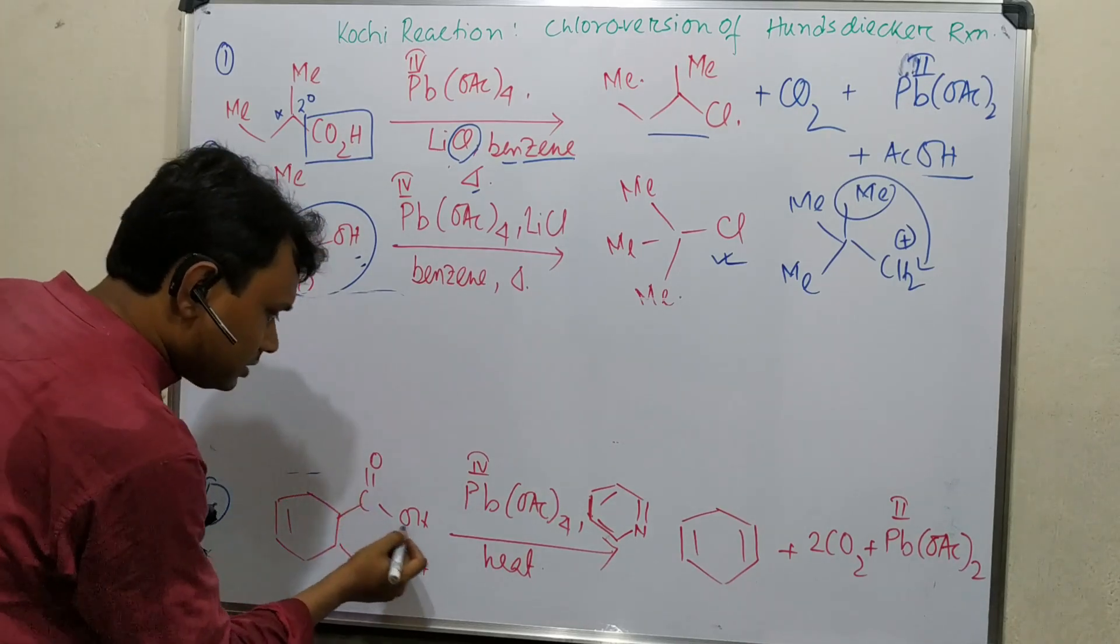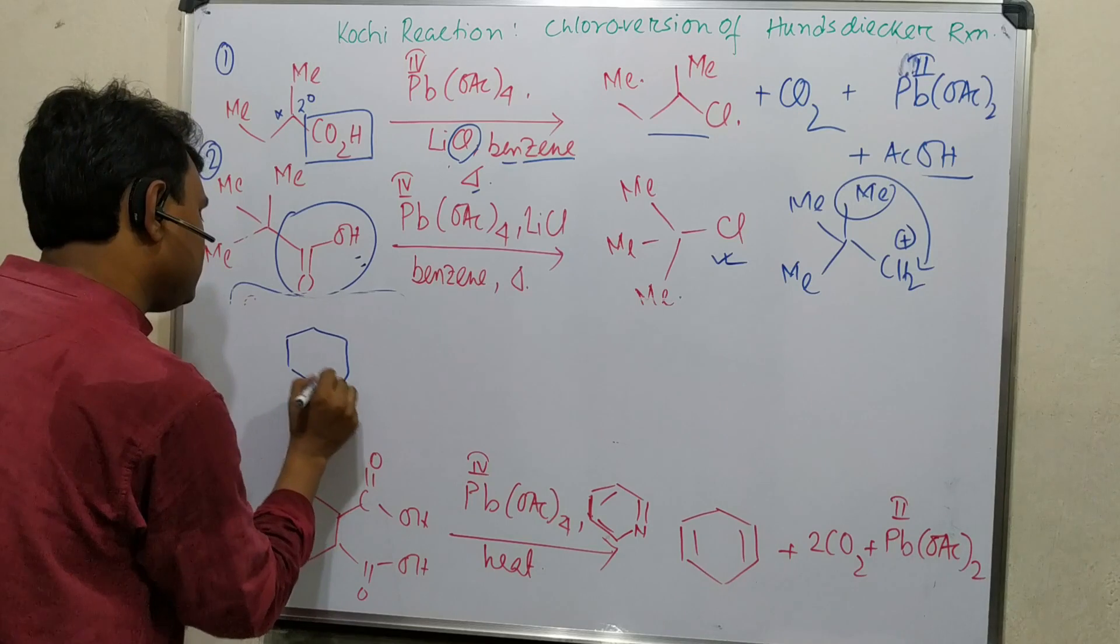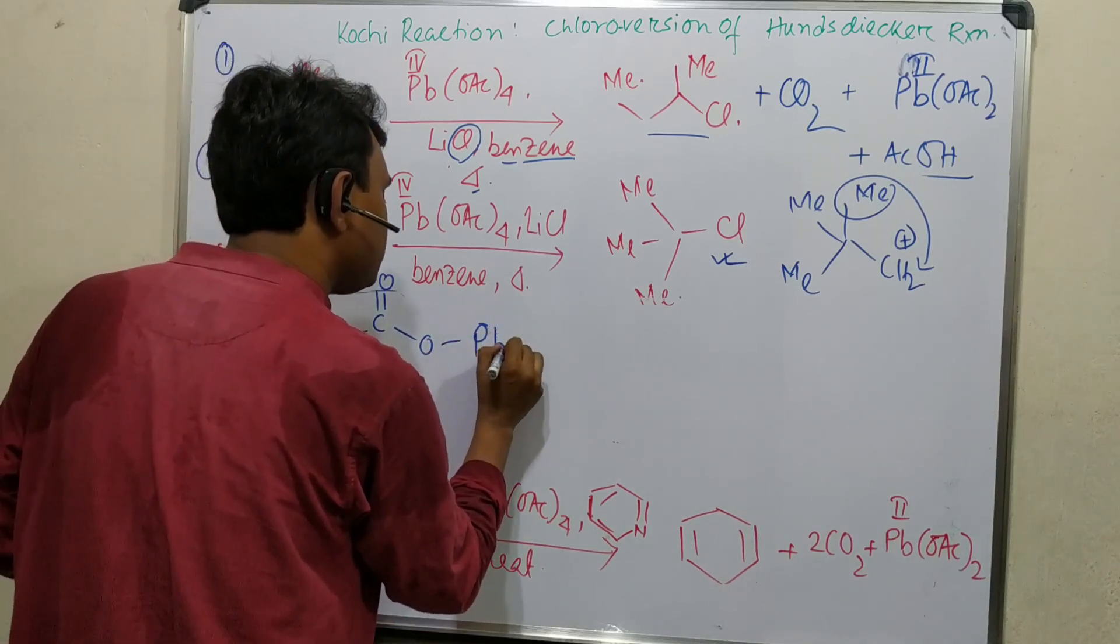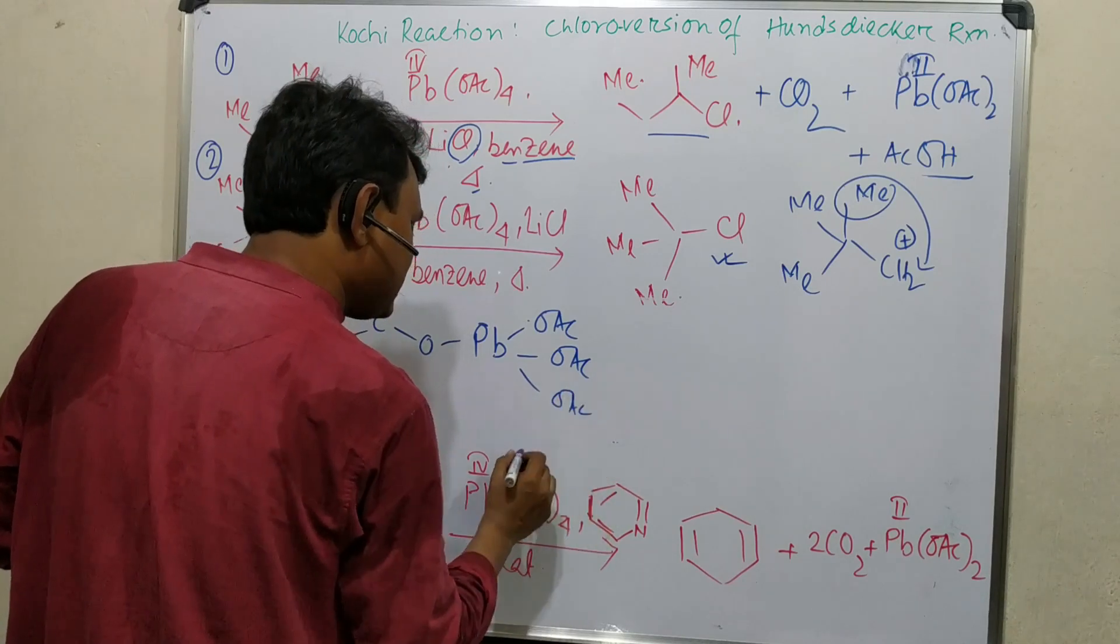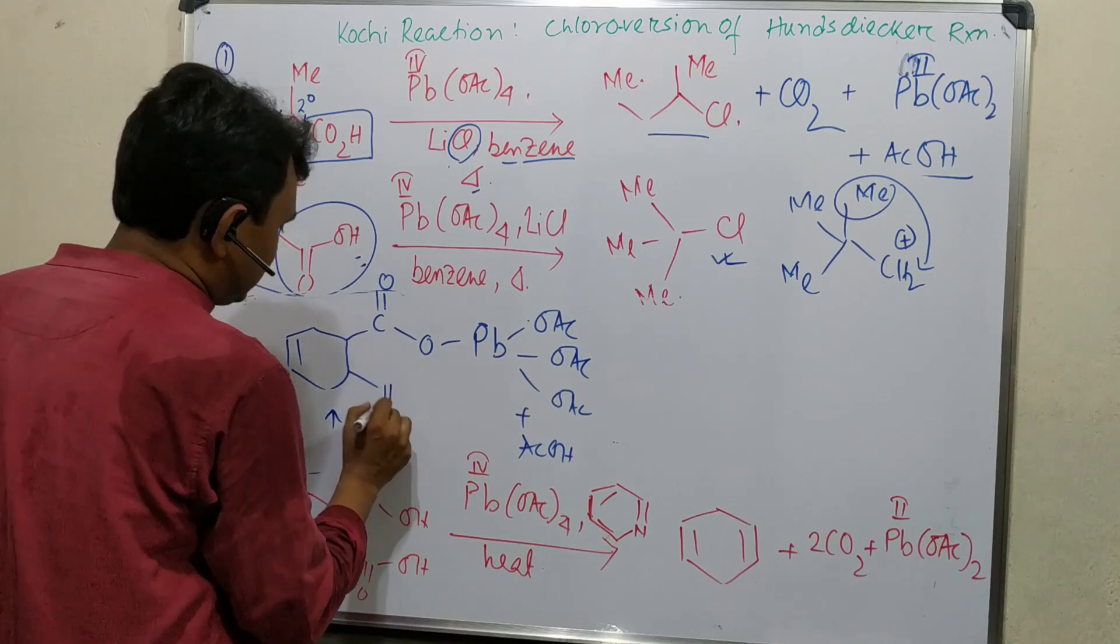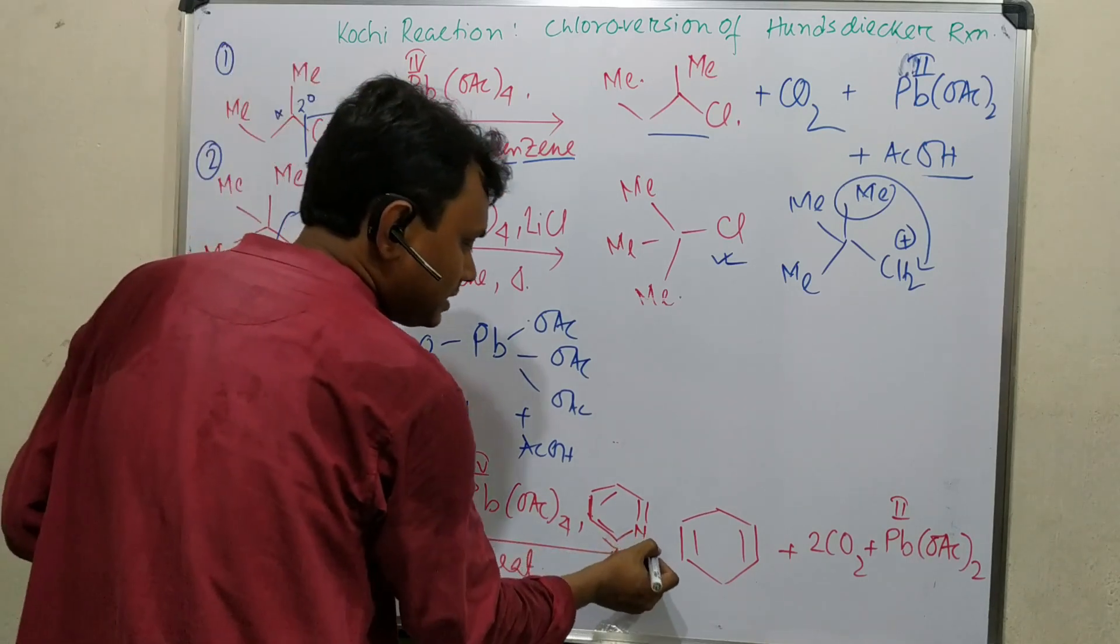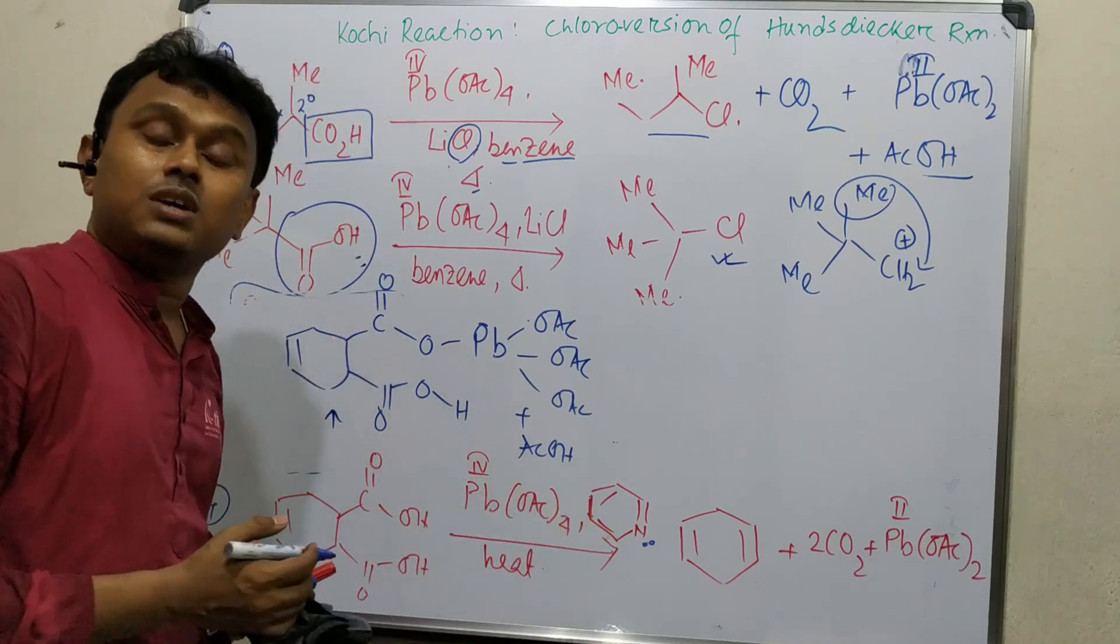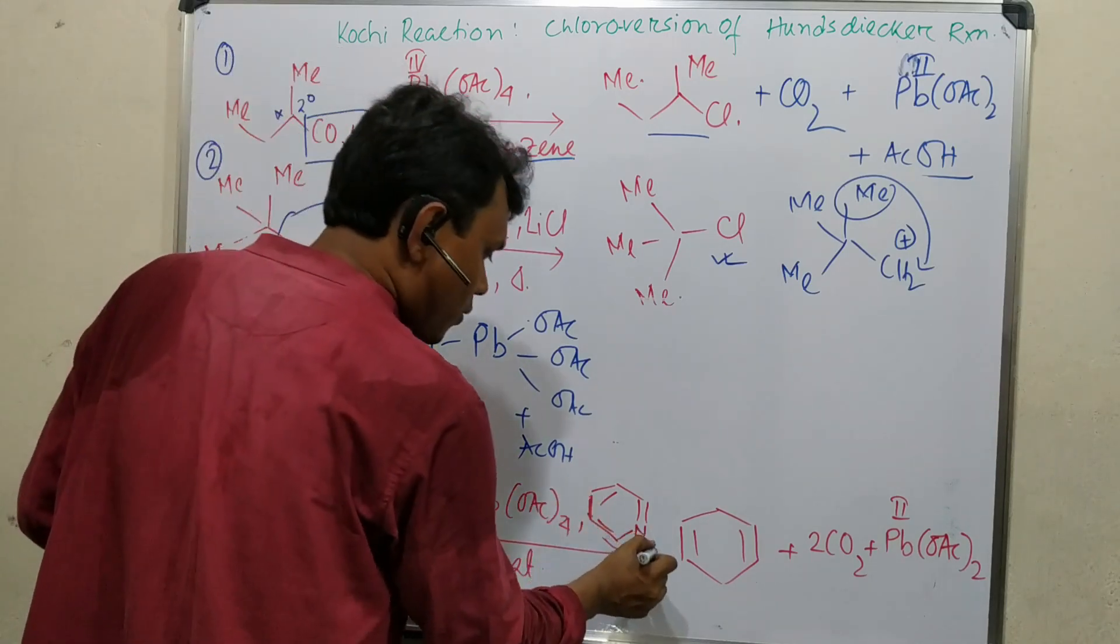Now let's discuss the fourth example which is a little tricky. This first attaches to lead tetraacetate. One acetate will be eliminated as acetic acid. Along with acetate there is heat and pyridine. As we know, there is no lithium salt here, so it's not directly the same mechanism but resembles it.